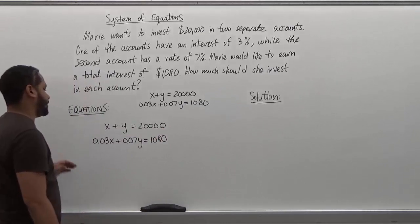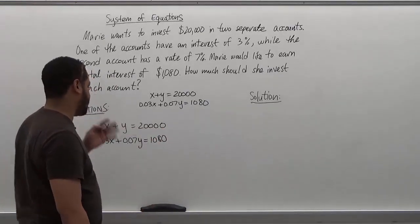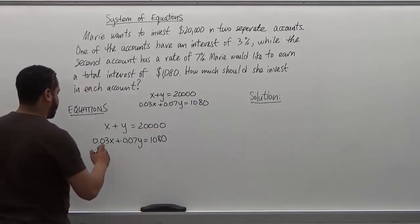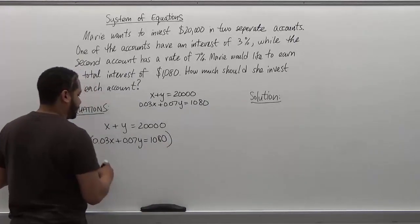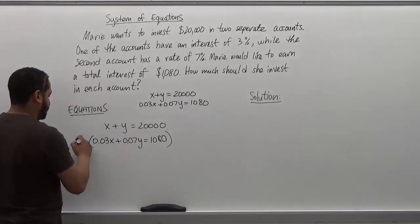The first thing we want to do here is get rid of the decimal terms. So what we do to get rid of the decimals is multiply everything by the number that gets rid of the decimals, which will be 100.